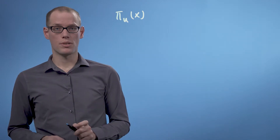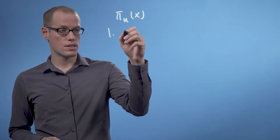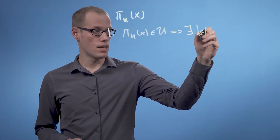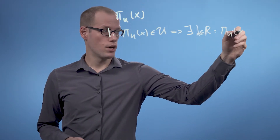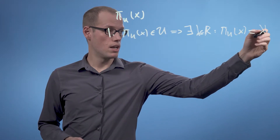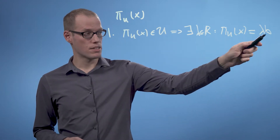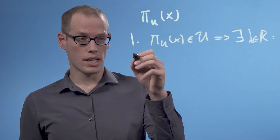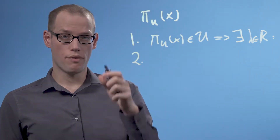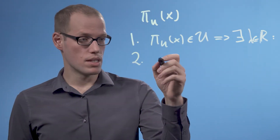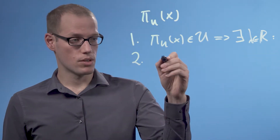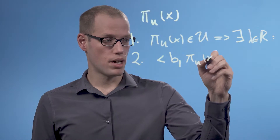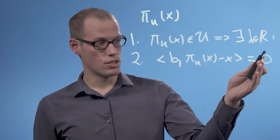The projection has two important properties. First, since pi_u of x is in u, it follows that there exists a lambda in R such that pi_u of x can be written as lambda times b — a multiple of the basis vector that spans u. Then lambda is the coordinate of the projection with respect to the basis b of the subspace u. The second property is that the difference vector of x and its projection onto u is orthogonal to u, meaning it's orthogonal to the basis vector that spans u. So the second property is that the inner product between b and the difference between pi_u of x and x is 0 — that's the orthogonality condition.